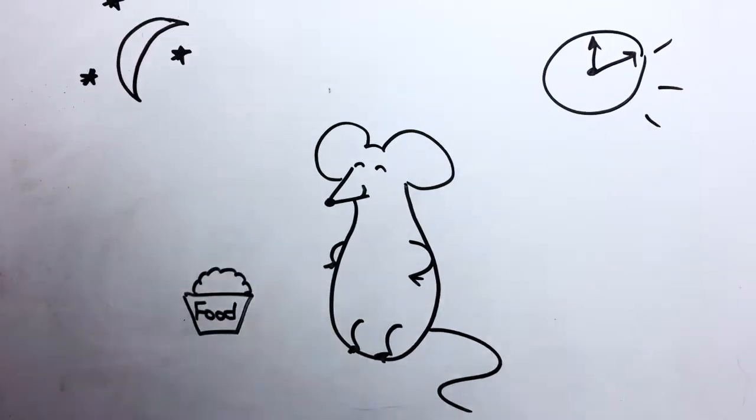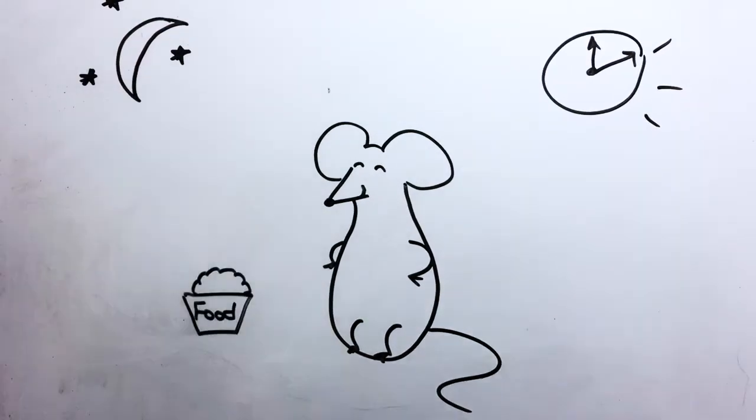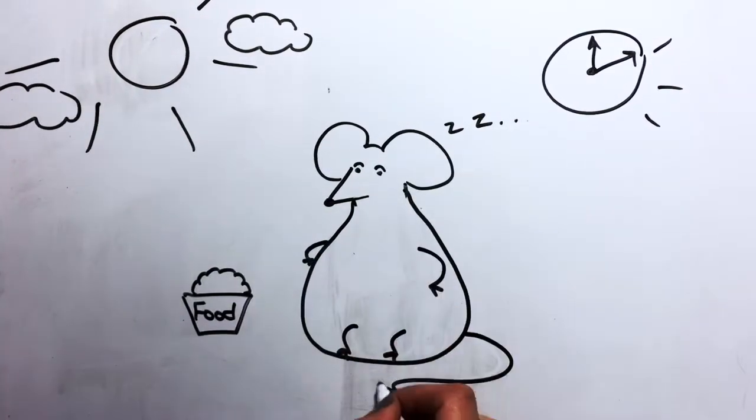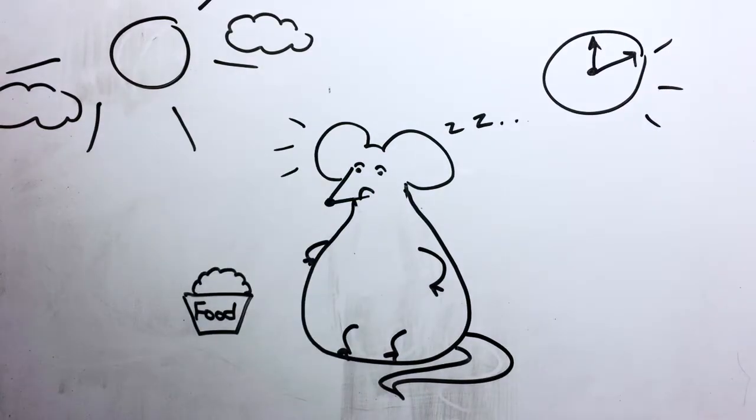For example, mice are nocturnal. They normally feed at night and rest during the day. But when fed incorrectly during the day, they develop obesity, even when they eat the same amount of food.